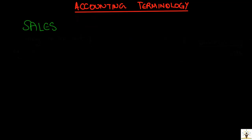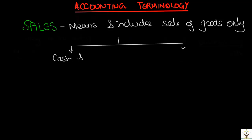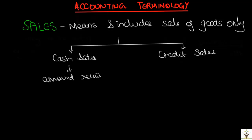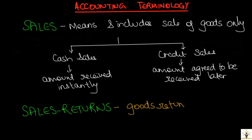The next important term is sales. For a common person who is not studying accounting, sales could mean selling anything. But in accounting, the meaning of sales is strictly restricted to the sale of goods only. Sale of anything else in the business is not termed as sales. Sales can be of two types: cash sales and credit sales. In cash sales, the amount involved is received immediately by the business from the customer. Whereas in a credit sale, it is agreed that the business will receive money from the customer on a later date. Sales returns means when goods are returned by a customer to the business for any reason — it is termed as sales returns.